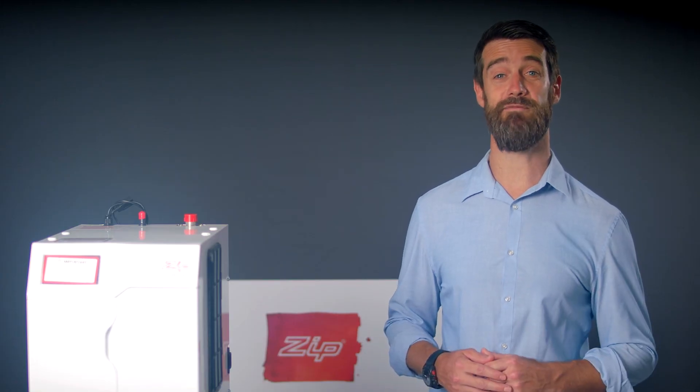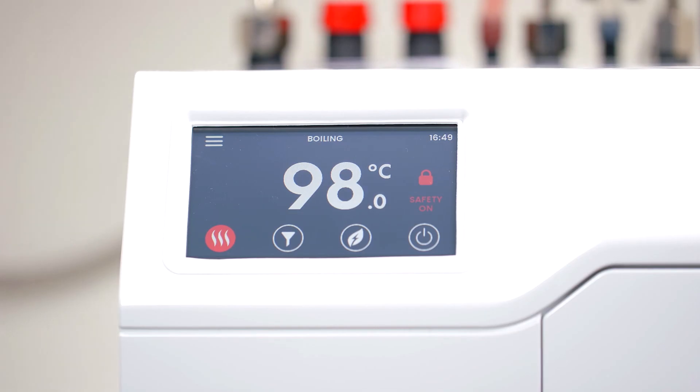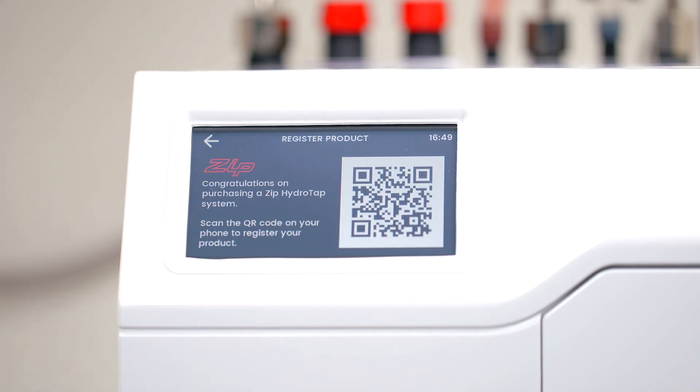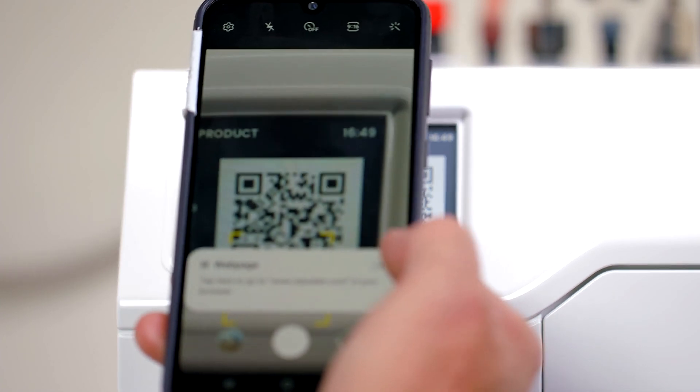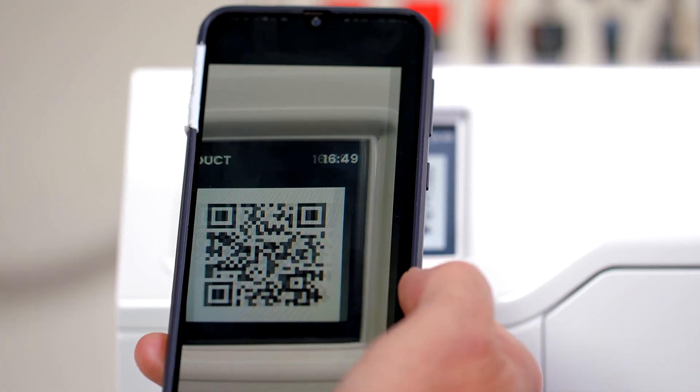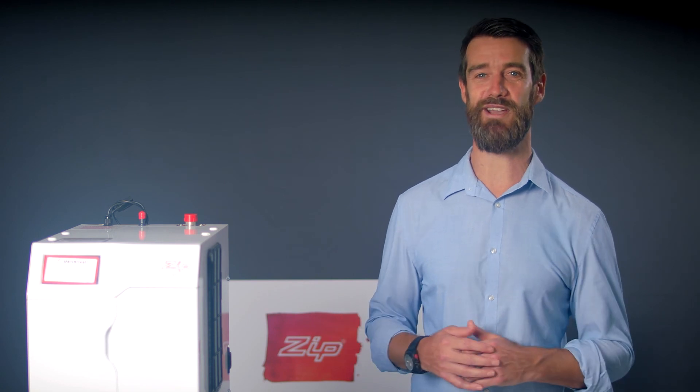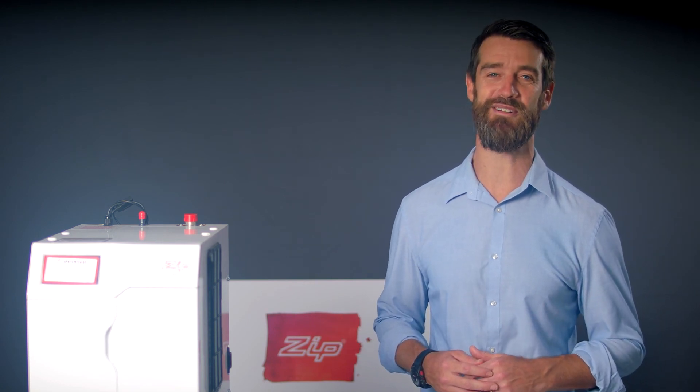You can register your HydraTap via a QR code. To do this, press the menu symbol, then register product and the QR code will appear on the screen. Use your phone or tablet to scan the code and register your product. Please visit zipwater.com for any further help videos or information on your new HydraTap G5.